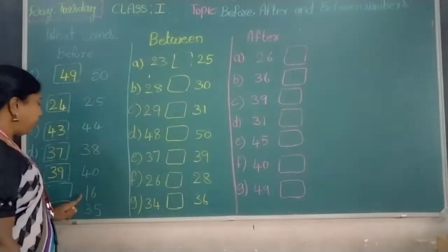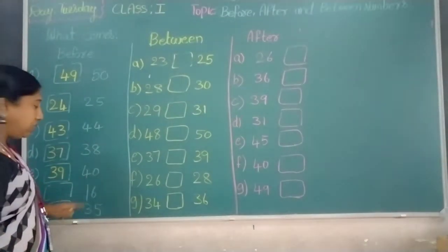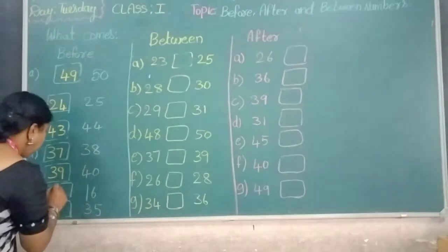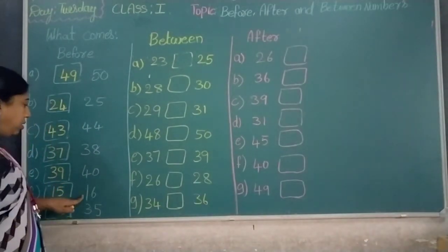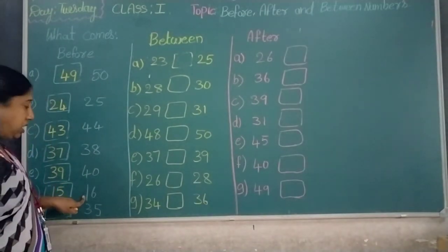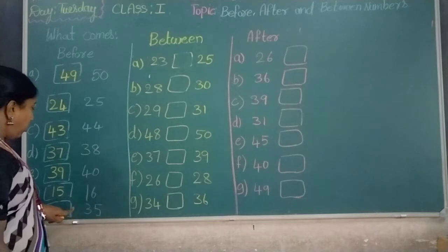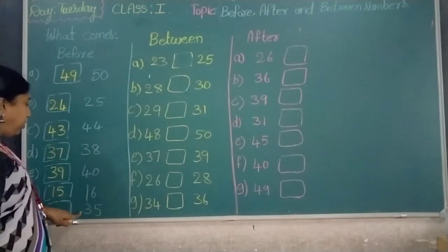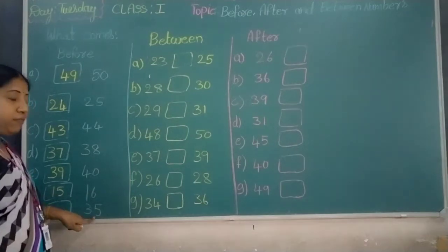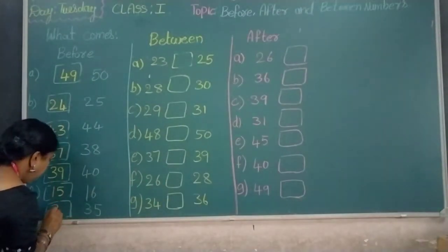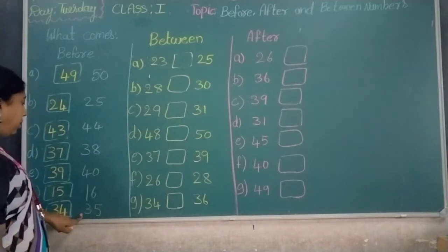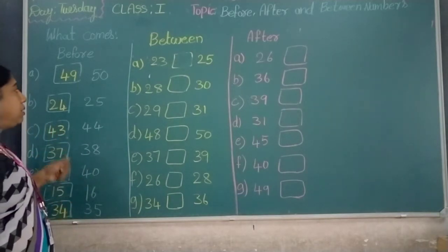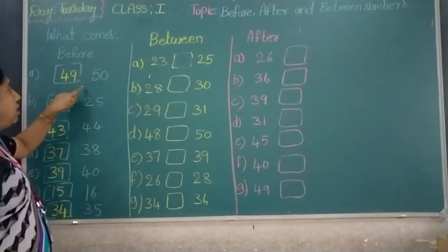What comes before 16? 15 comes before 16. What comes before 35? 34 comes before 35. Once again I will review them.